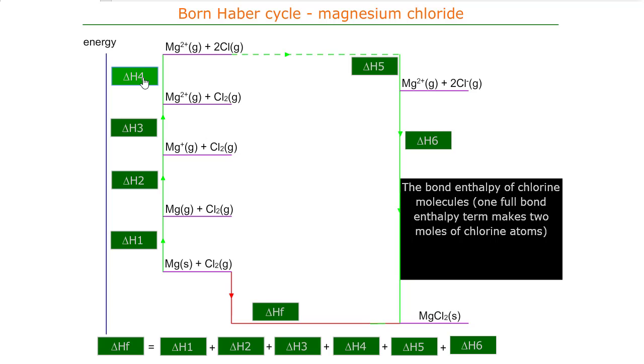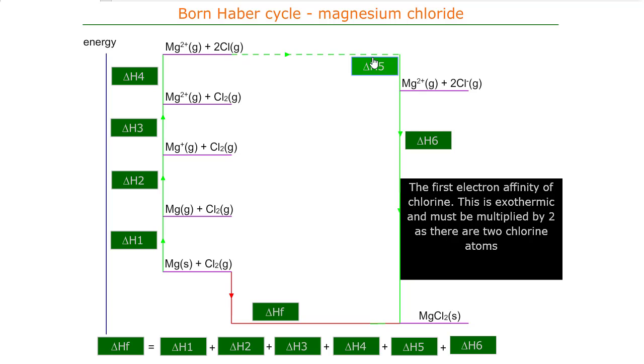I haven't put the electrons in this cycle. Now the next stage then is the chlorine atoms pick up the two electrons. The electron affinity of chlorine—this is double the electron affinity of chlorine, because of course there's two chlorines here.